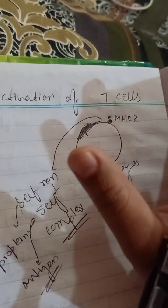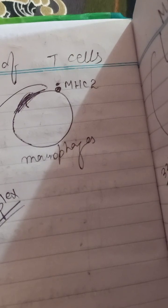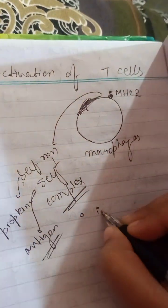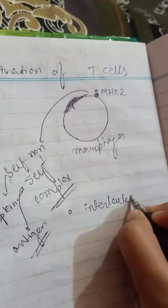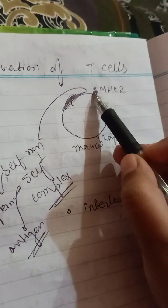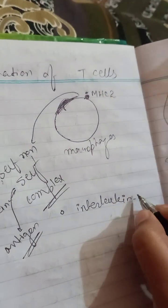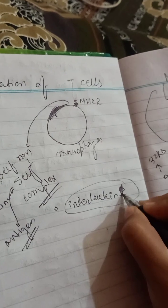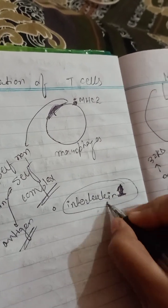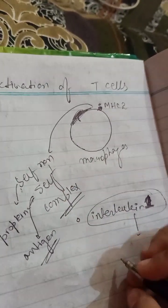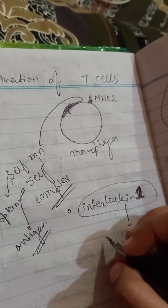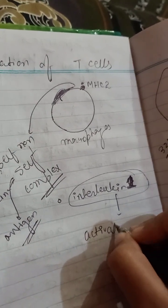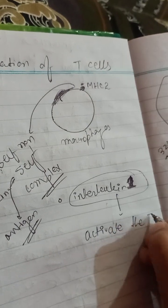The macrophage will release a chemical — interleukin-1 — after it represents the antigen on the MHC2. Interleukin-1 is a chemical which is released by the macrophages, and it will activate the T cells.